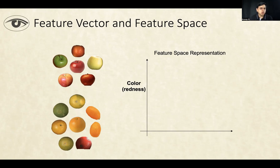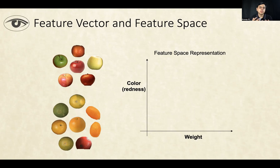Now, not all features need to come from images. For example, if I have a weighing scale connected to your computer, then I can measure the weight of these fruits, and that can become another feature. And these two together — the redness and the weight — together become a feature vector.